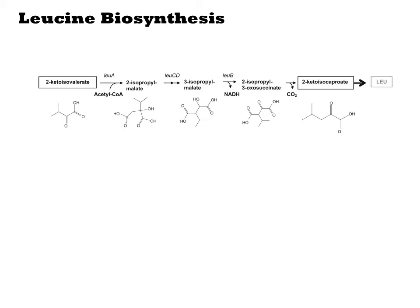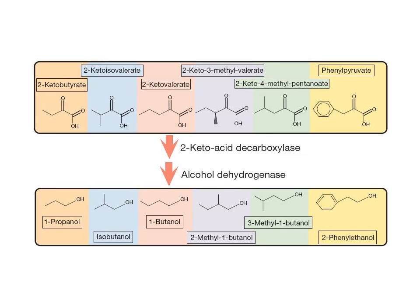Atsumi instead branches off of amino acid biosynthesis. They recognize that in many amino acid biosynthetic pathways there's an alpha-ketoacid intermediate, including those for amino acids with short alkyl chains. Decarboxylation of this species would generate the aldehyde, and reduction would lead to the short chain alcohol. They are able to branch off of six alpha-ketoacid intermediates to generate six different alcohols. Notice that two different isomers of butanol, including the same one in the Clostridium pathway, are generated.